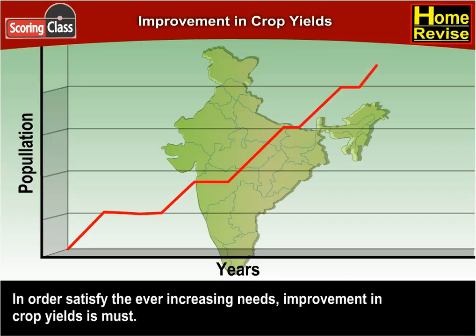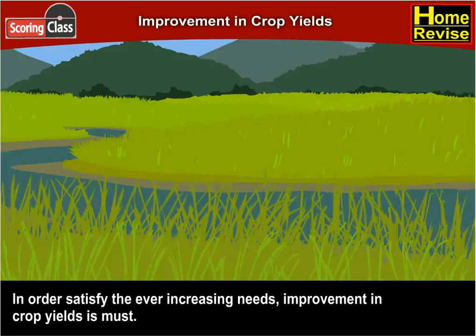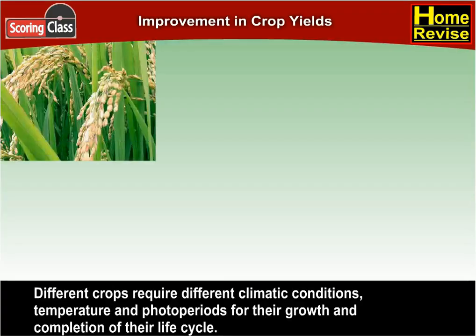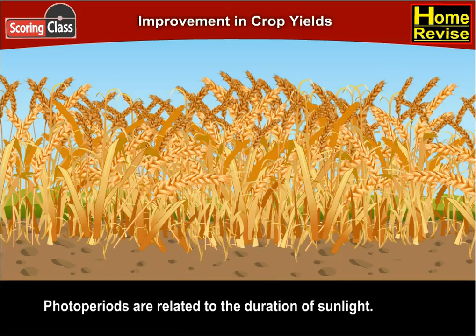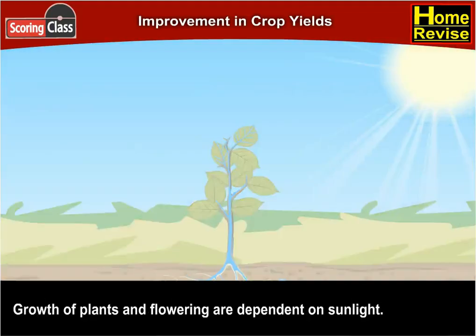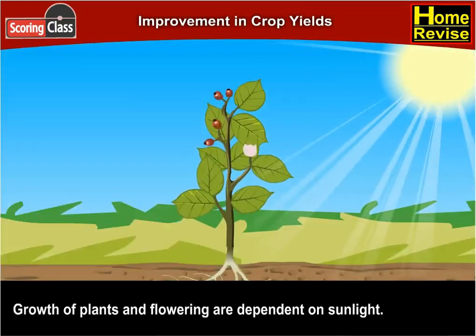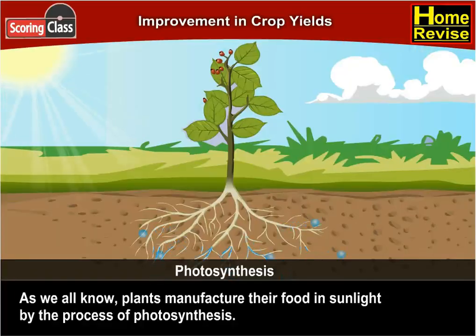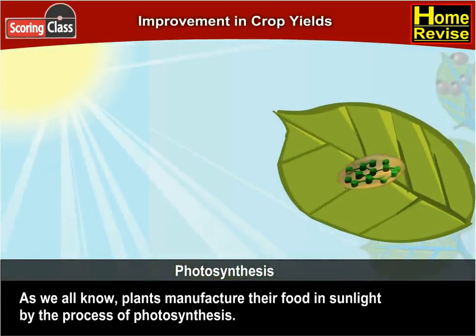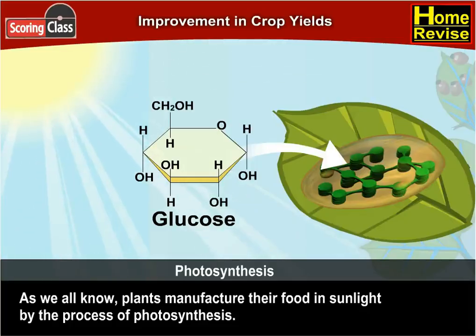Improvement in crop yields is a must to satisfy ever-increasing needs. Different crops require different climatic conditions, temperature, and photo periods for their growth and completion of their life cycle. Photo periods are related to the duration of sunlight, and growth of plants and flowering are dependent on sunlight. As we all know, plants manufacture their food in sunlight by the process of photosynthesis.